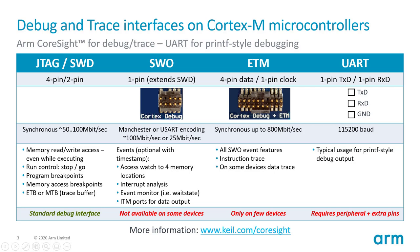ETM is not always available; only a few devices offer it, and it uses additional pins that may be shared with device peripherals, creating configuration challenges. The last technology is classic UART output using TX and RX pins, typically running at 115 kilobaud. It is normally used for printf-style debug output but requires a UART peripheral and extra pins.